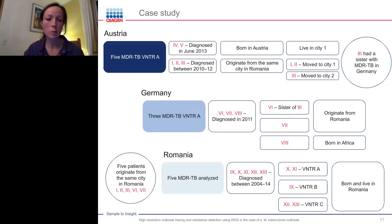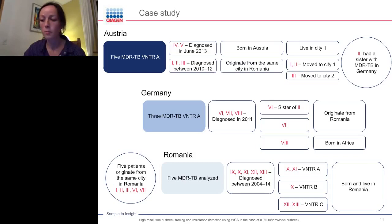The investigation revealed that patient 3 had a sister also diagnosed with multidrug-resistant TB, living in Germany, prompting Austrian authorities to contact the National Reference Laboratory in Germany. In early April 2014, the German National Reference Lab had detected three isolates of multidrug-resistant TB, also with VNTR genotype A — the same type as the Austrian isolates. All three patients were diagnosed in 2011. Patient 6 was the sister of patient 3; patient 7 also originated from the same Romanian city; and patient 8 was a man born in West Africa, diagnosed with extra-pulmonary TB with a non-drug-resistant strain.